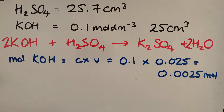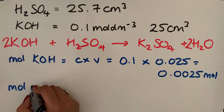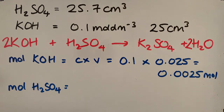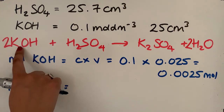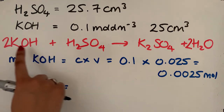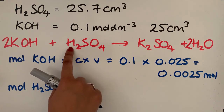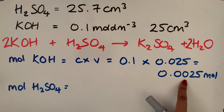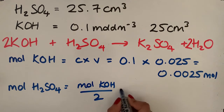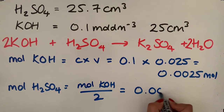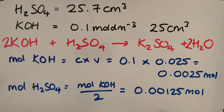We now want to work out the moles of sulfuric acid, using the balanced equation. The molar ratio is 2:1 — two moles of potassium hydroxide react with one mole of sulfuric acid. So we divide the moles of KOH by two: moles of H₂SO₄ = 0.0025 ÷ 2 = 0.00125 moles.